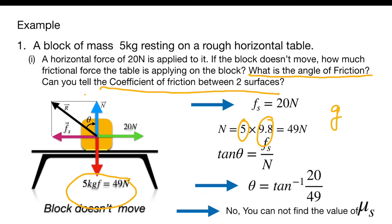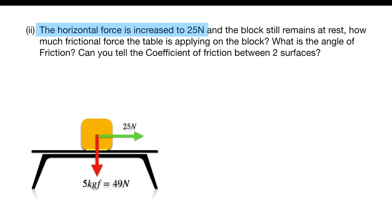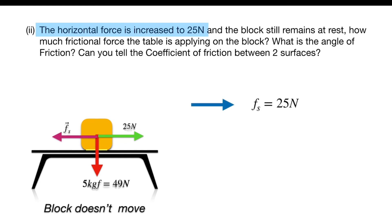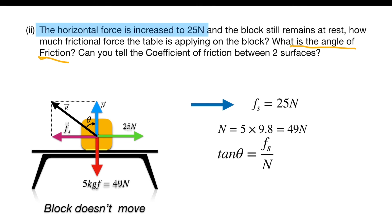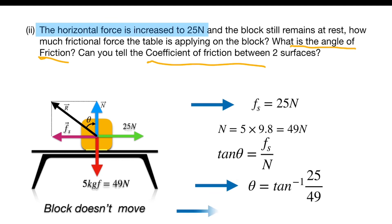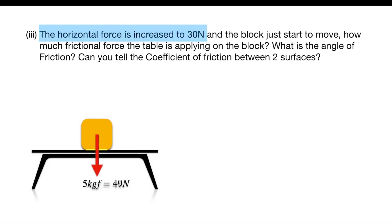Case 2: The horizontal force is increased to 25 N and the block still remains at rest. The static friction equals the applied force: 25 N. The normal force remains the same at 49 N. The angle of friction is tan inverse of 25 over 49. Again, since the frictional force is not the limiting value, we cannot find the coefficient of friction.